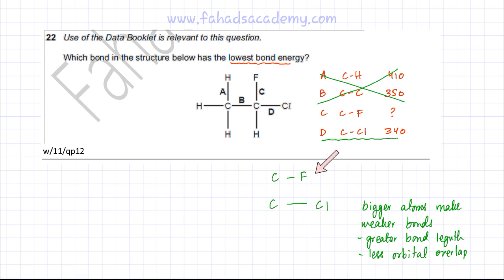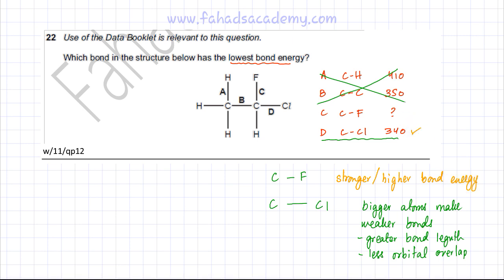Therefore, the C-F bond is comparatively stronger than the C-Cl bond and will have a higher bond energy. Since we were looking for the lowest bond energy, the C-Cl bond has the lowest bond energy because the C-F bond is stronger. The correct option is D — the C-Cl bond is the weakest of all four bonds.